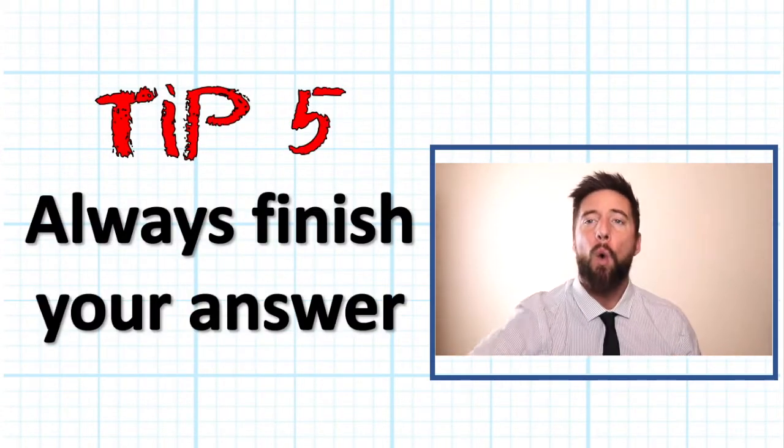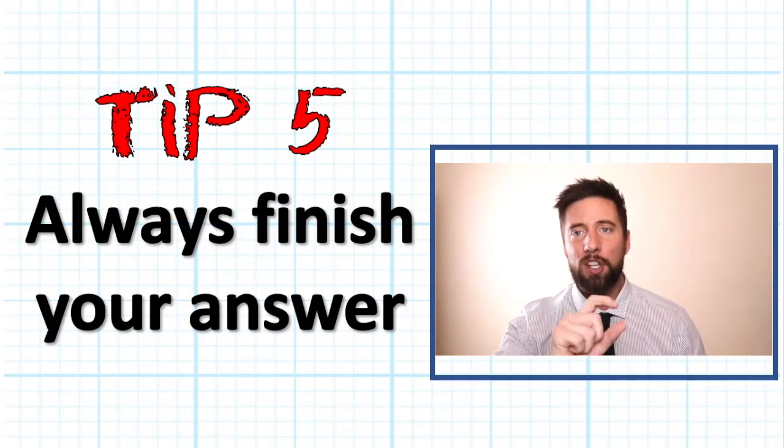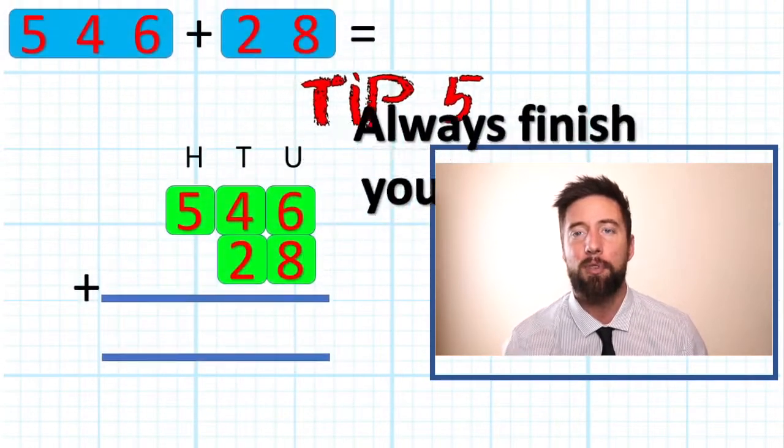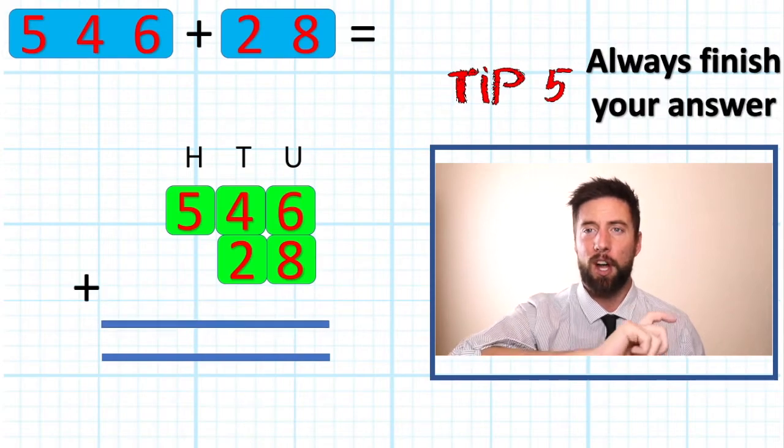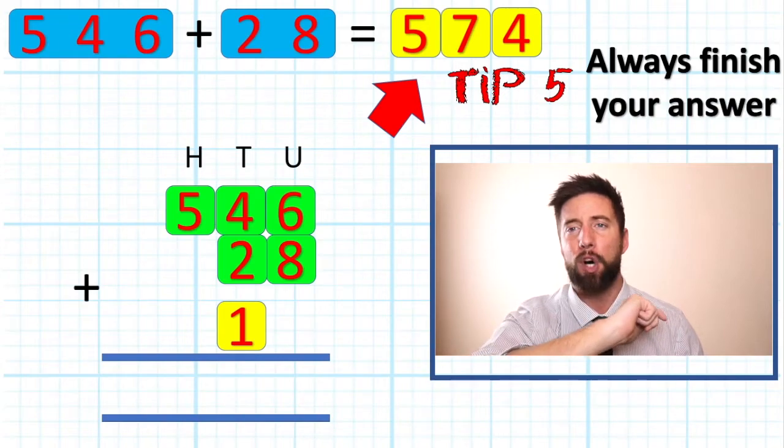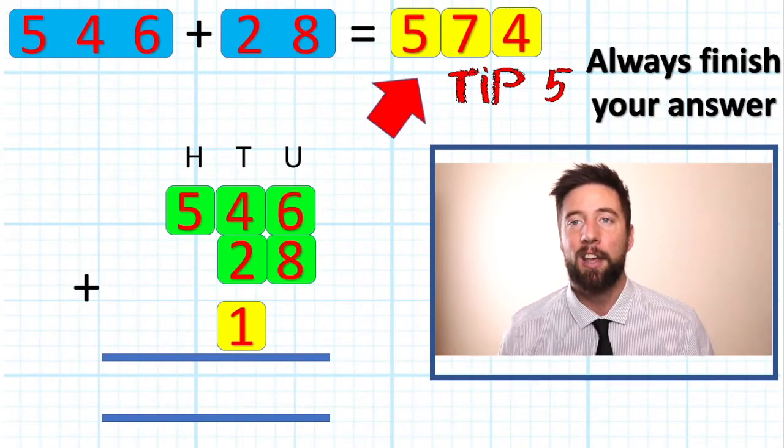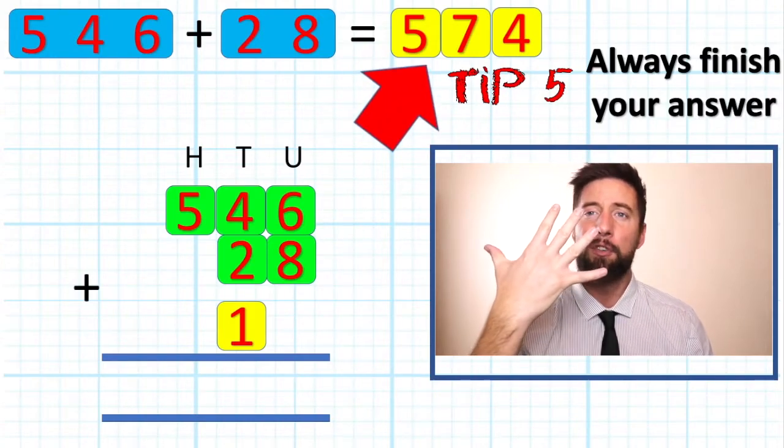Tip number five, last tip, we must always finish our question. Don't just leave your answer here in the answer row. Put your answer back up with the question to complete your number sentence. Bing bang bosh, you've now done your perfect column addition. Okay, well done. Five tips, remember them.